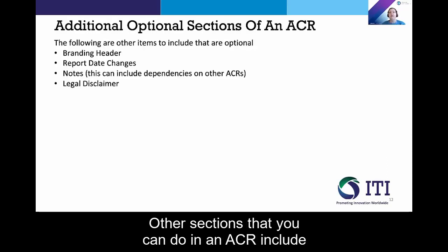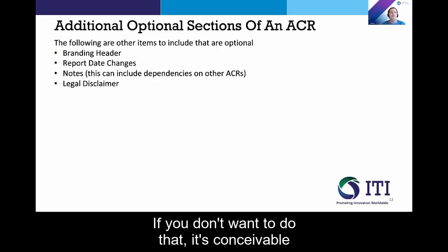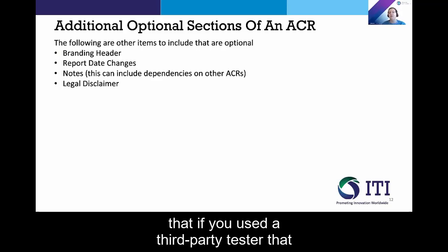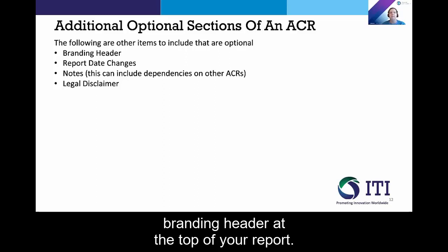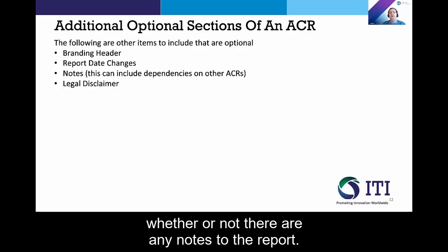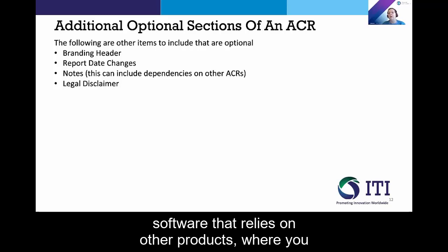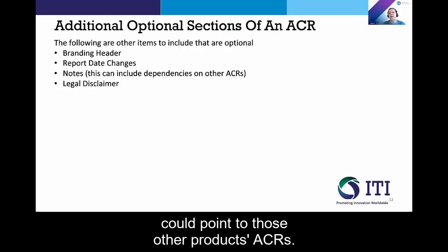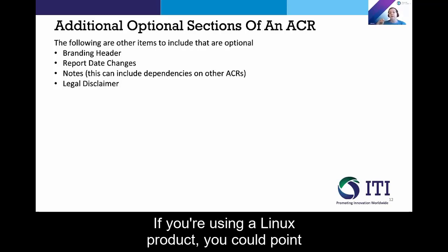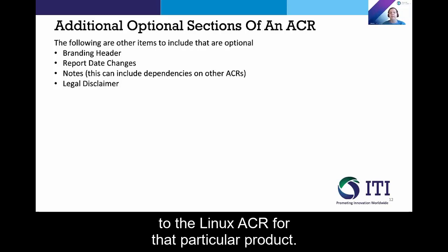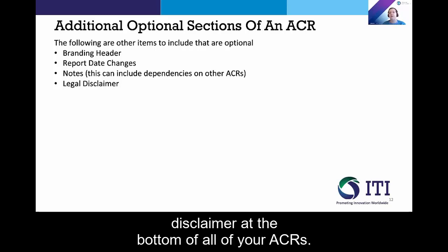Other sections you can include in an ACR include a branding header. For example, you might want to include a standard header for your corporation. If you used a third-party tester, that third-party tester may request to put their branding header at the top of your report. You can also include whether there are any changes or notes to the report. This is a good place, especially for complicated software that relies on other products, where you could point to those other products' ACRs. For example, if you're using a particular design system, you could point to that design system's ACR, or if you're using a Linux product, you could point to the Linux ACR for that product. And finally, if you have a legal department, chances are they're going to want to include a disclaimer at the bottom of all of your ACRs.